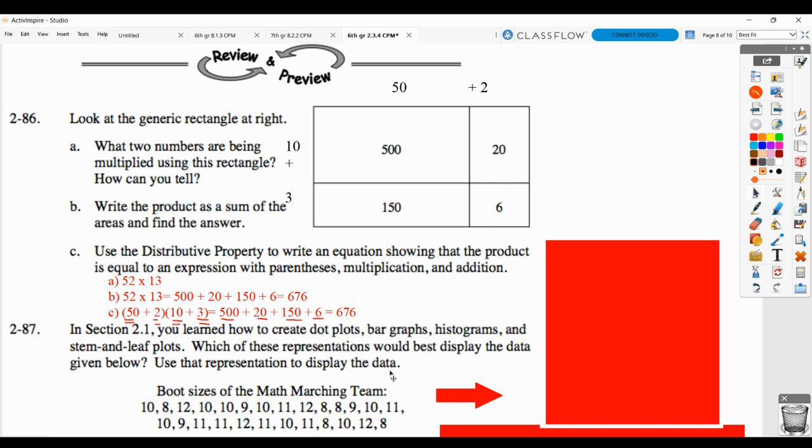Then for 287, you have to look at the data that they're showing you and decide which would best represent the data, and then actually display the data. So they're talking to you about dot plots, bar graphs, histograms, and stem and leaf plots.